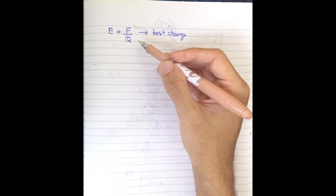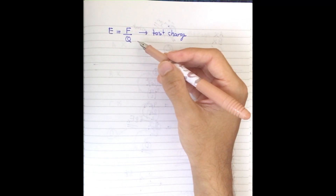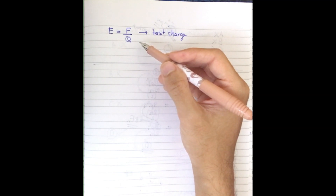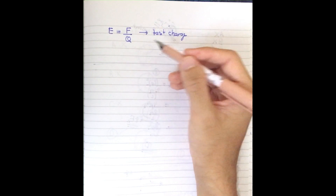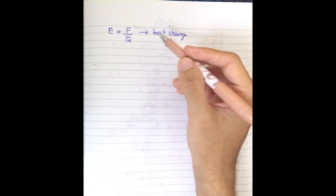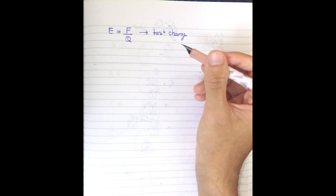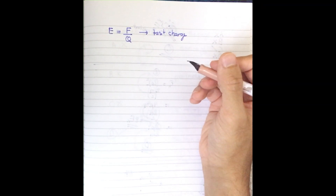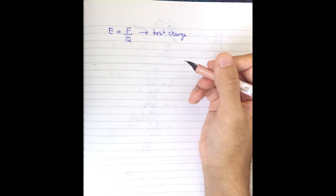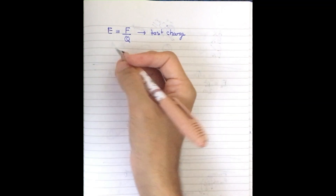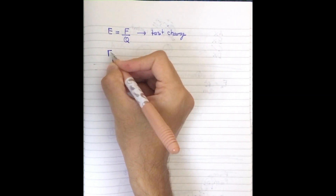We also have F equals ma, and we can write ma as m times delta v over t, to find the time for the helium nucleus to achieve the same change in speed. Let me expand this formula out.